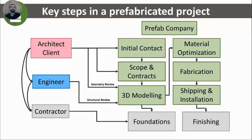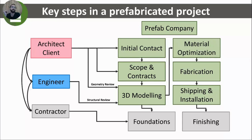After those advantages, let's talk about the steps in a prefabricated project. The main actors for us are usually the architect and the client who drive everything, the engineer responsible for structural, and the contractor who does everything else. Different prefabrication companies will offer different services. Our examples are based on what we do here at BC Passive House. We typically only do building envelope and structure — we're not responsible for windows, finishes, or drywall. We basically build and install the envelope, excluding windows and doors.